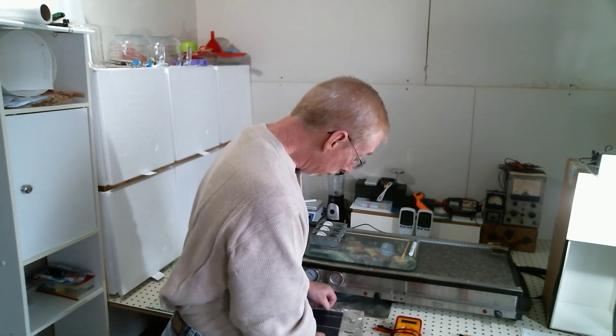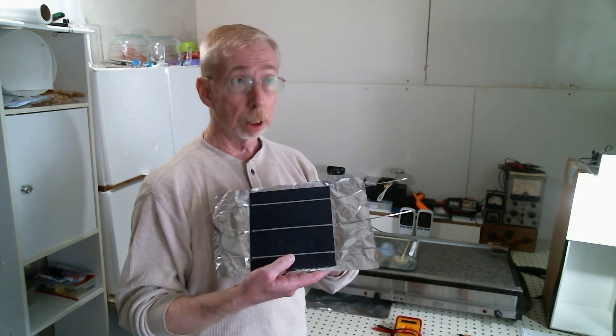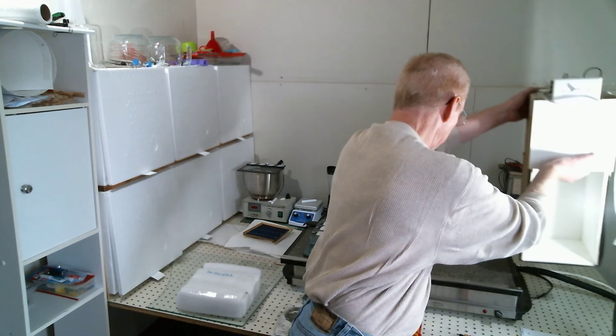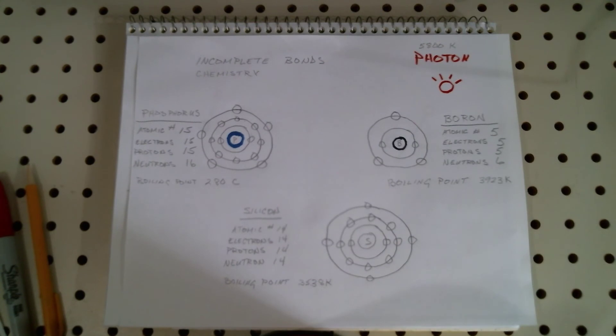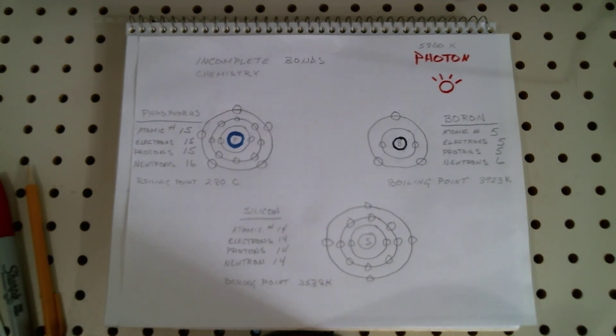Today we're going to conclude with testing it and I'm going to show you how to construct a light box. Now constructing a light box is going to help you test your cells in a consistent and reproducible way. You can certainly carry this outside with your multimeter shining in the sun and test it that way. The reason we use a light box as I have said is for consistency. Alright, so let's get started.